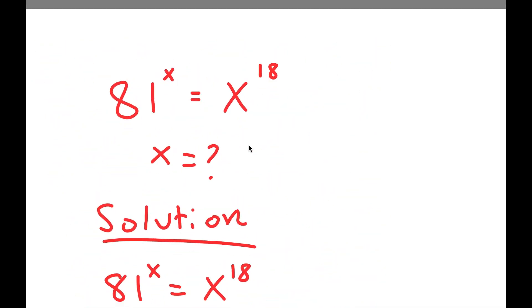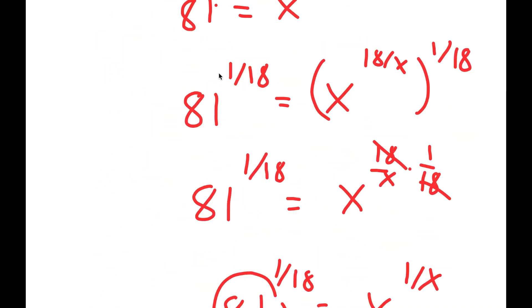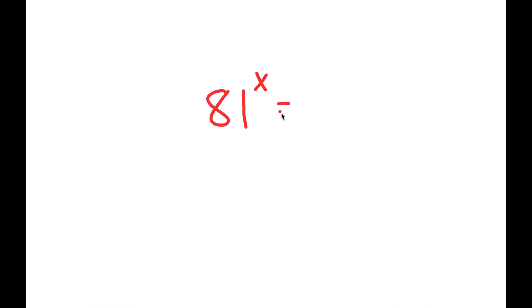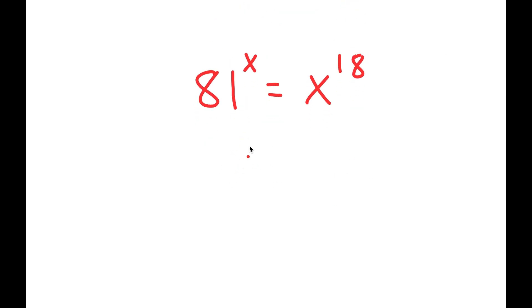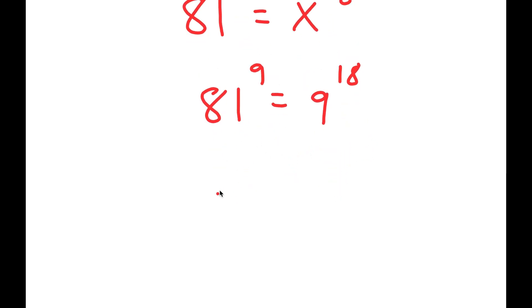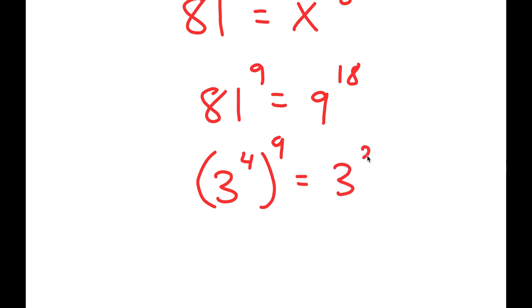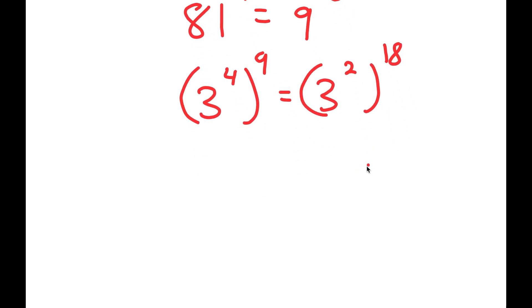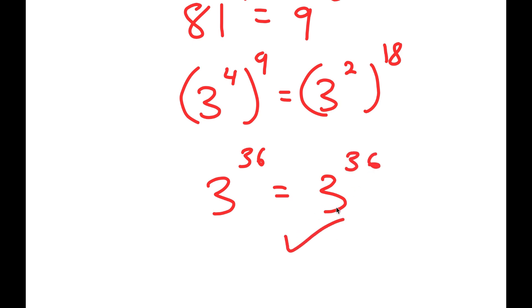Going back to the original equation, let's check if this is right. So I have 81 to the power of x is equal to x to the power of 18, and x is equal to 9. Plugging in 9 for x, I get 81 to the power of 9 is equal to 9 to the power of 18. Now 81 is the same thing as 3 to the power of 4, and 9 is the same thing as 3 squared. So I get 3 to the power of 4 to the power of 9 is equal to 3 squared to the power of 18. Using the power rule, 3 to the power of 4 times 9 gives 3 to the power of 36, and 3 squared to the power of 18 also gives 3 to the power of 36. So this is correct.